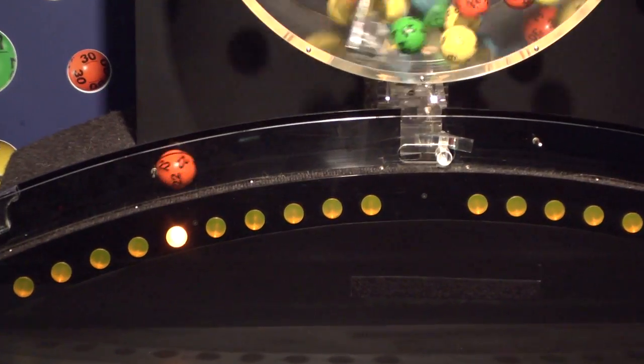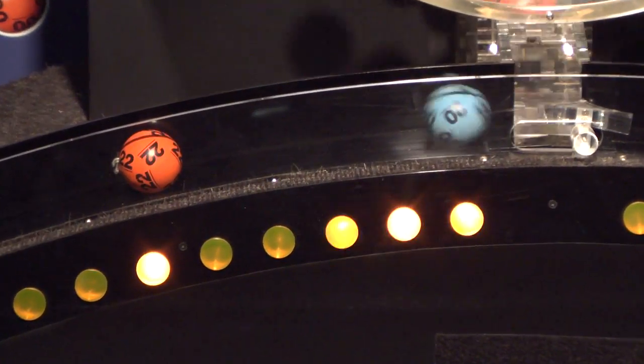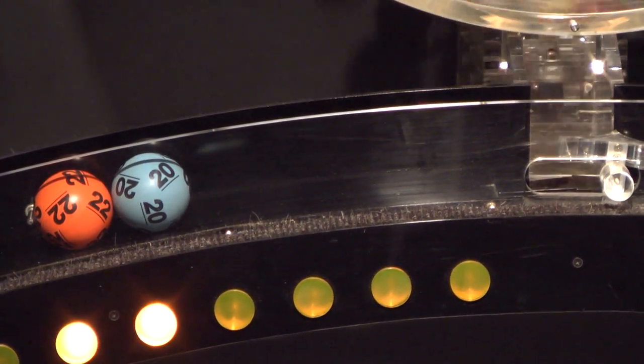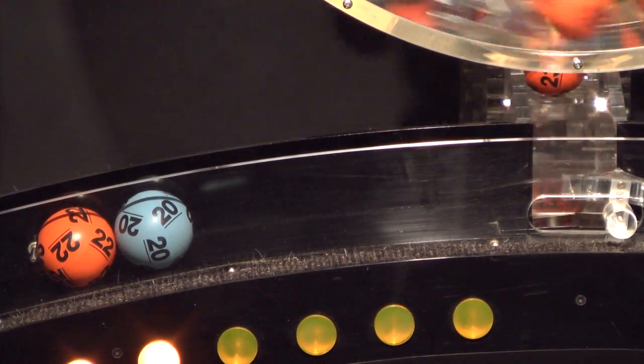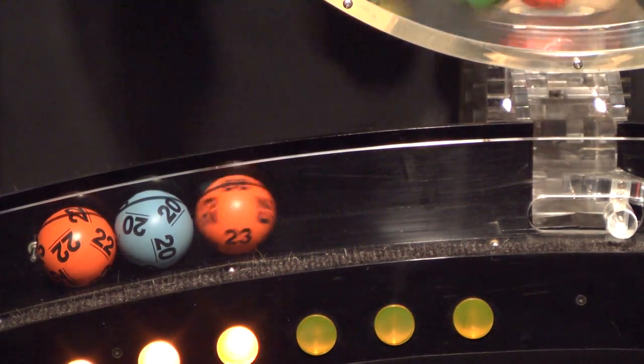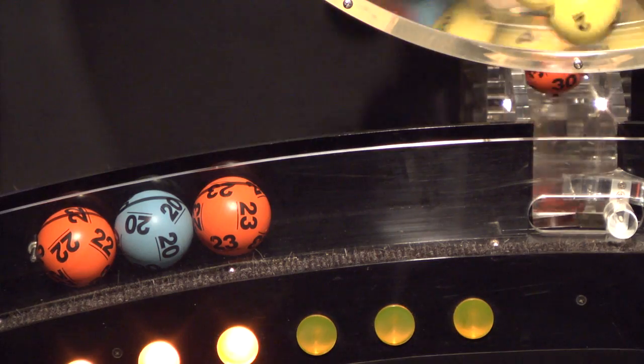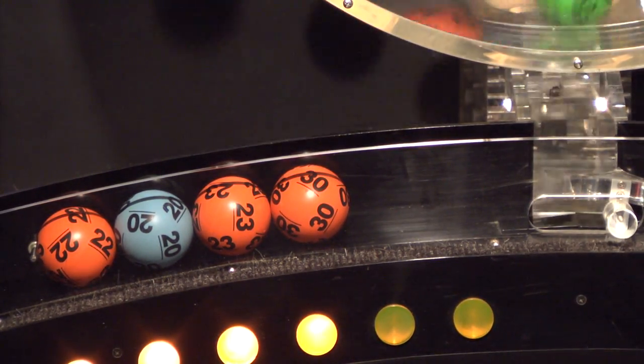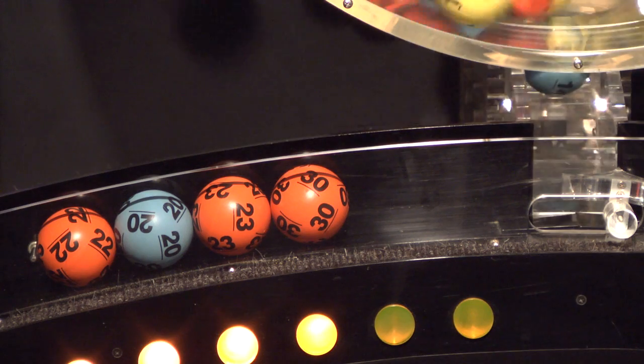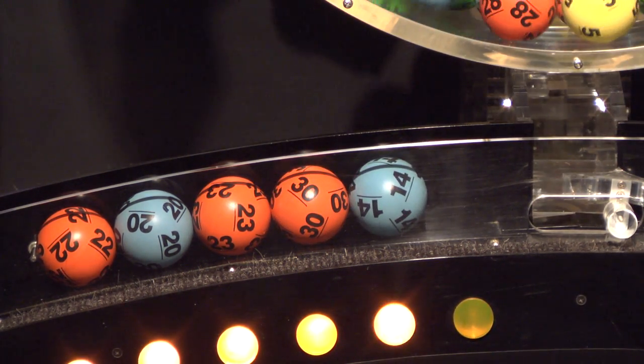That first number is 22, next 20, followed by 23. If you match these three numbers, you've already won a prize. Here comes 30. And finally, 14.